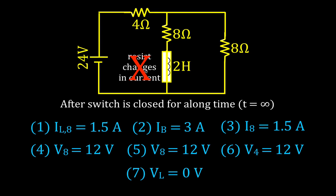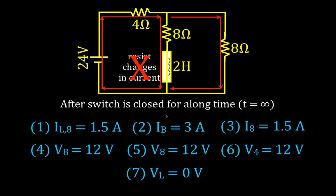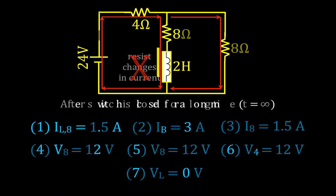Before moving to the next scenario, it's important to note the direction of current flow. Conventional current flows from the positive terminal. In the inner loop, current flows in one direction, and in the outer loop it flows the other direction — this will be important when we open the switch.